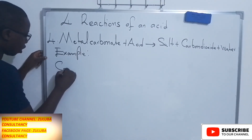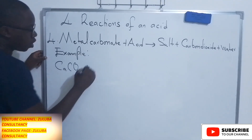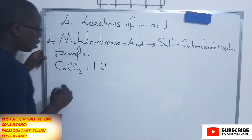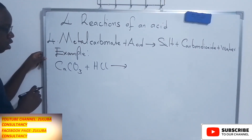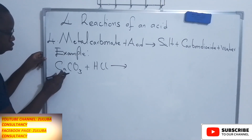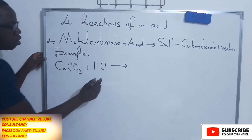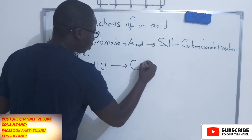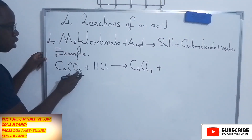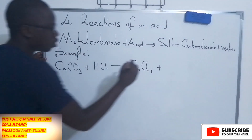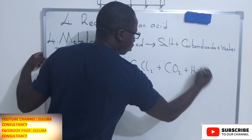We can have calcium carbonate. When it reacts with an acid — let's use hydrochloric acid — the first product is a salt, which comes from calcium and chlorine to make calcium chloride. Then we should also have carbon dioxide and water.